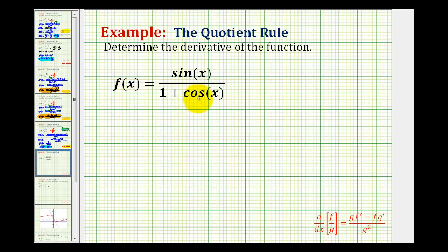To determine the derivative of the given function, we need to recognize this as a quotient of two differentiable functions. So we'll have to apply the quotient rule to determine this derivative.